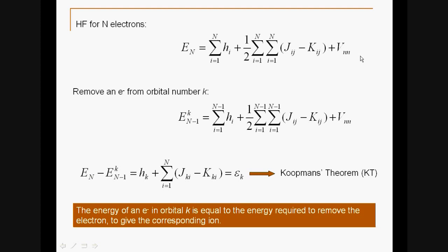Let's say I would like to remove an electron from orbital K. Here's how I denote it. Here's the same equation as before, however this time I have one less electron. If I take the difference between these equations, I have written it down here.